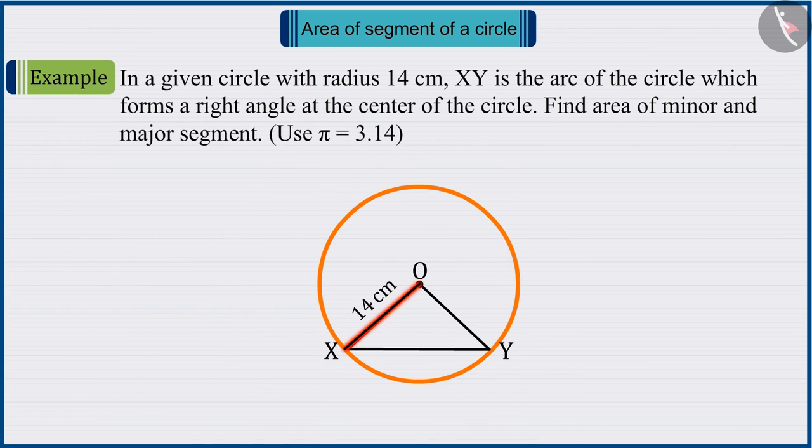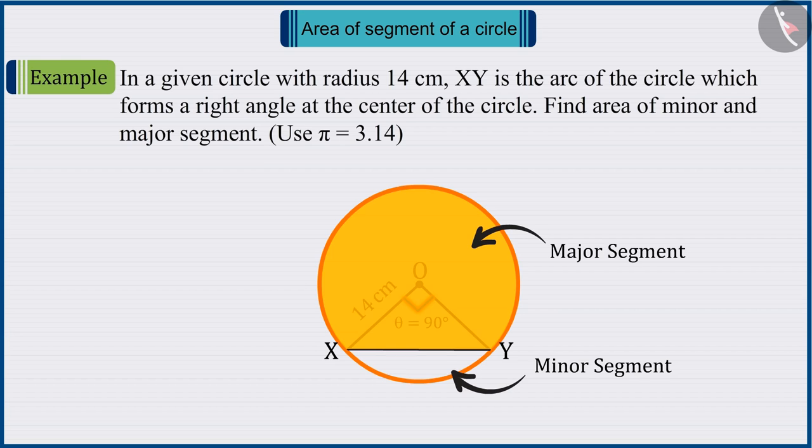In a given circle of radius 14 cm, XY is an arc of the circle which forms a right angle at the center of the circle. So can you find the area of minor and major segment? Here, use the value of pi equals 3.14.